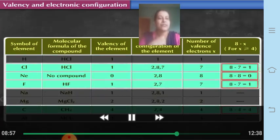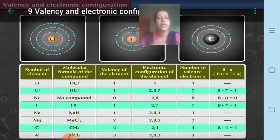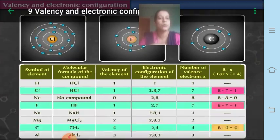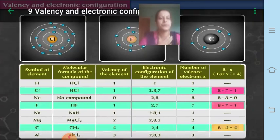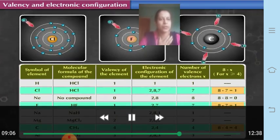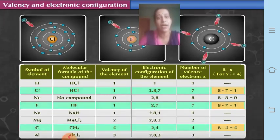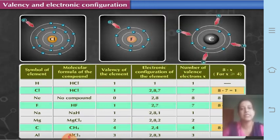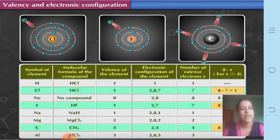The number of valence electrons and the value of 8 minus x are both related to the valency of elements. Elements requiring electrons to complete their octet take that many electrons, and that number is their valency. In chlorine, the outermost shell has 7 electrons and requires 1; so 8 minus 7 equals 1, and valency is 1. For fluorine with configuration 2, 7, it requires 1 electron to complete octet — wait, that is 8 minus 7 equals 1. For carbon with 4 electrons, it requires 4 electrons to complete the octet, so 8 minus 4 equals 4.